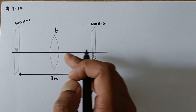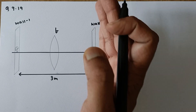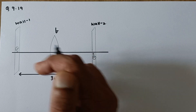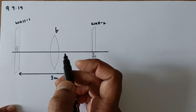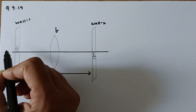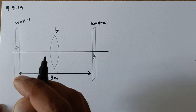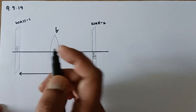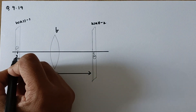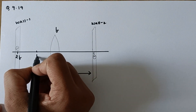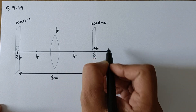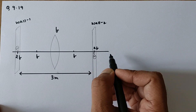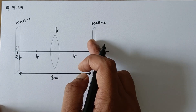First, we need to understand that once you want to obtain the image on the wall, this wall behaves as a screen, and there will be a real image. Real images are inverted. We know that for a real image, the minimum gap between the object and the image is 4f. When you keep the object at twice the focal length, you get the image of the same size at 2f on the other side of the lens.